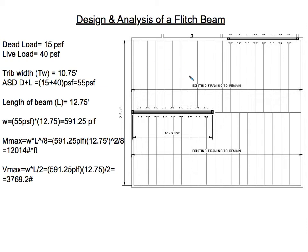The exterior dimension from wall to wall is 21 feet 4 inches, and the length of the beam will be 12 feet 9 inches, or 12.75 feet. We add dead and live load together: 15 plus 40 equals 55 pounds per square foot. The tributary width the beam experiences is 10.75 feet — that's 21.5 feet divided by two — so half of the total load goes to the beam, and a quarter goes to each exterior wall.